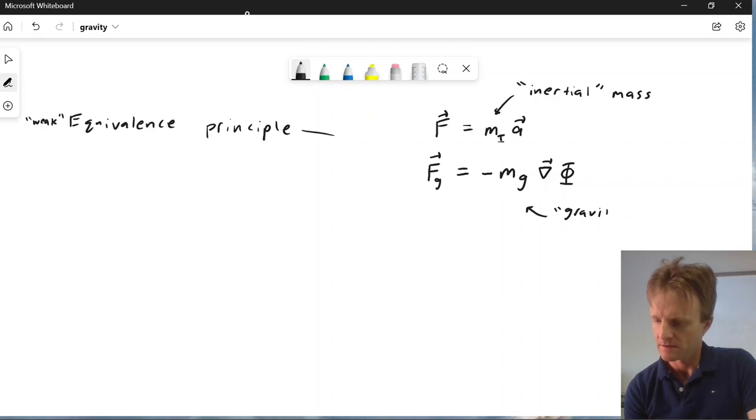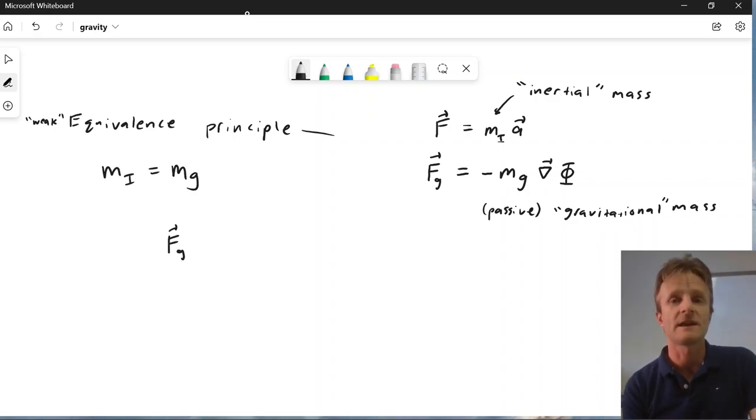And I put a little g on here for the idea that this is something a little different. This is the gravitational mass. And then the weak equivalence principle is simply that these two are the same.